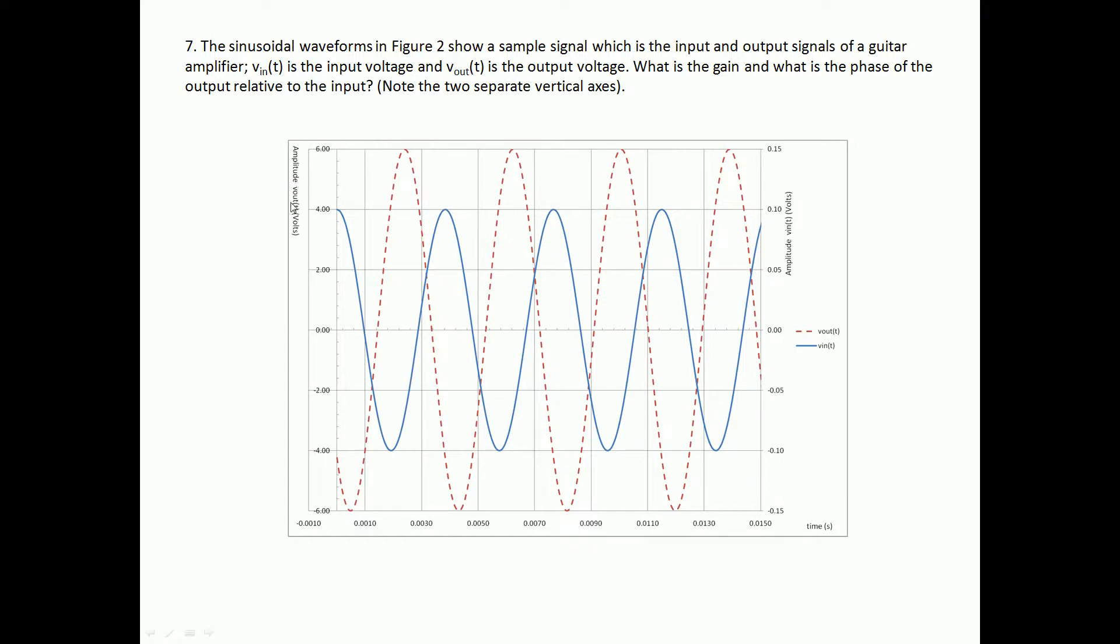What we've got up here is two different vertical axes. The one on the left corresponds to the amplitude of V_out(t) in volts and this goes from minus six volts to positive six volts. On the other side we've got the scale for the amplitude of V_in(t) in volts, and note this goes from minus 0.15 volts to positive 0.15 volts.